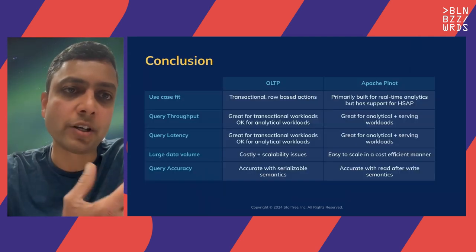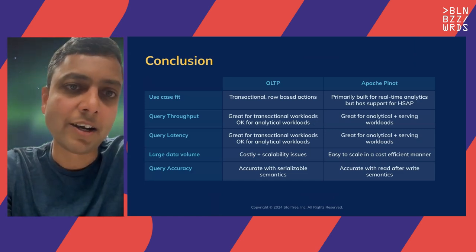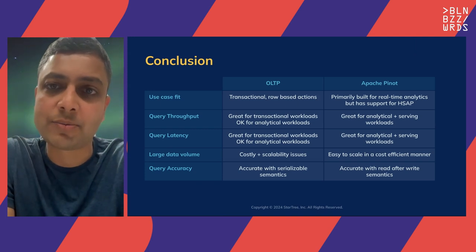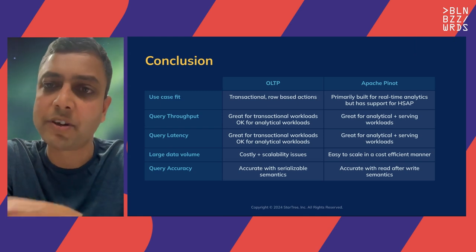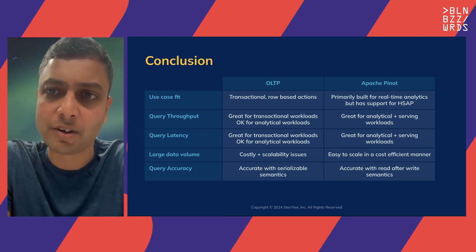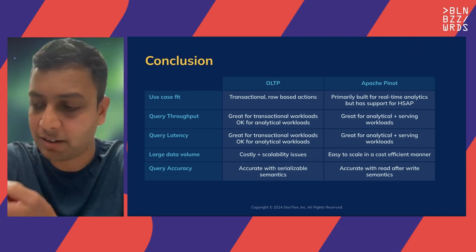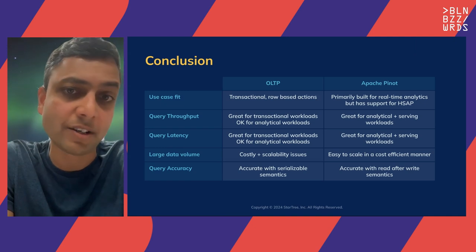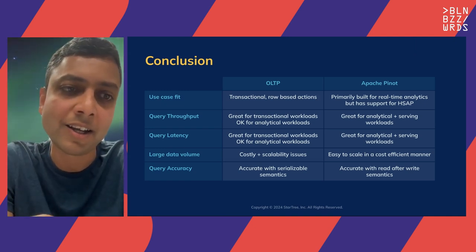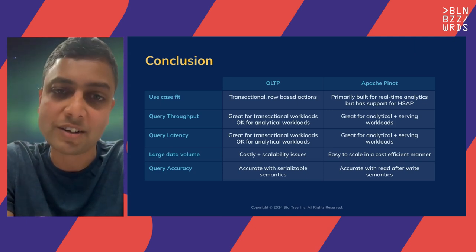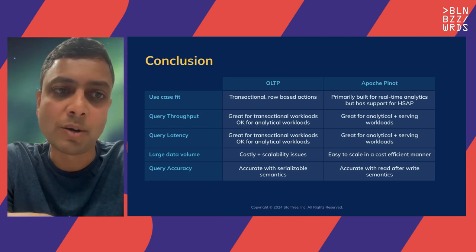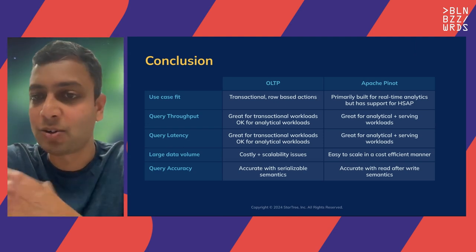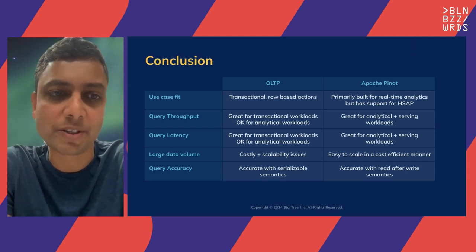In summary, comparing these two technologies: OLTP is a great fit for transactional row-based actions, whereas Pinot is primarily built for analytics but also has support for HSAP — if you want lookups for a given key and want the same platform for both serving and analytical purposes, Pinot becomes a very good fit. Transactional databases are great for transactional workloads but not so great for analytical workloads in terms of throughput and latency. Pinot is built for analytical workloads and can still sustain the throughput and latency requirements for data serving.